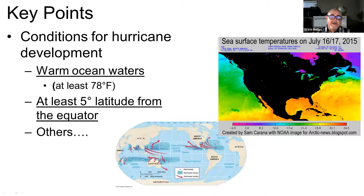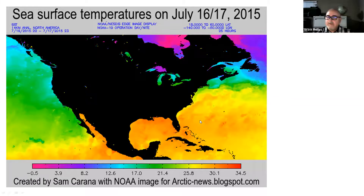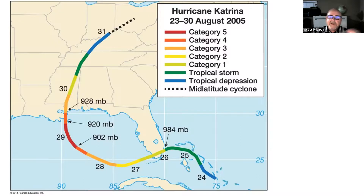The conditions you need for hurricanes are warm ocean waters and being about five degrees in latitude north or south of the equator, where Coriolis force starts to develop. Here's a closer view showing extremely cold waters off California, which is why we don't hear about hurricanes there. The storm track of Hurricane Katrina illustrates warm sea water as fuel — it starts as a tropical depression, develops into a tropical storm, and then really powers up as it enters warm waters.